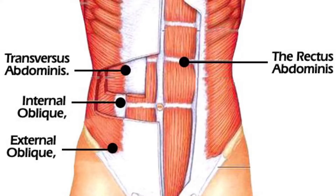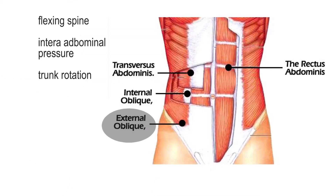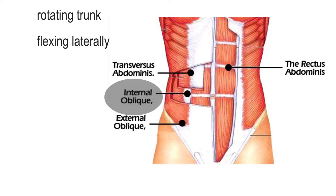The human core consists of four muscle groups: external obliques, internal obliques, transverse abdominis, and rectus abdominis. The external obliques function to flex the spine — like in a crunch — or increase intra-abdominal pressure, and also help in rotating the trunk and flexing laterally. Inside the external obliques we have the internal obliques, which assist in rotating the trunk and flexing laterally.